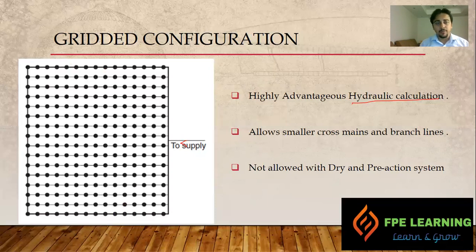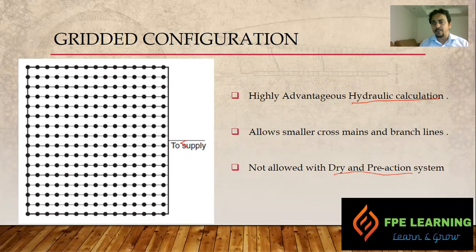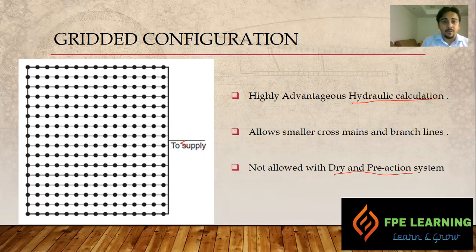However, there is one problem with the gridded configuration — we cannot use it with dry and preaction systems. In dry and preaction systems, we have air above the dry valve. If you want to see that, links are in the description for dry, deluge, and preaction system videos, or you can visit my YouTube channel. The gridded configuration is not allowed with dry and preaction systems because of the following reason.